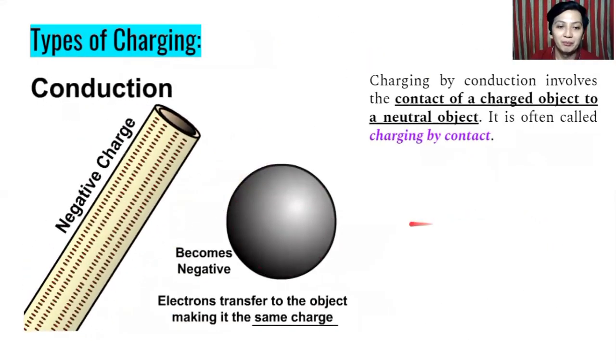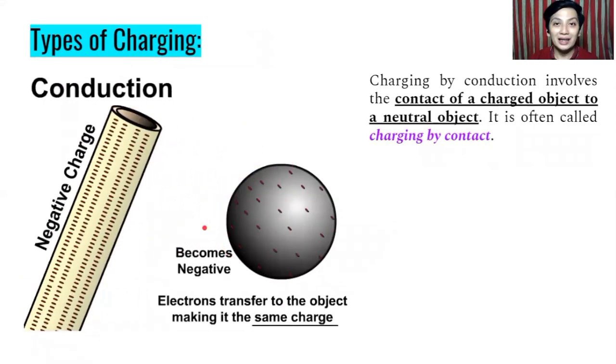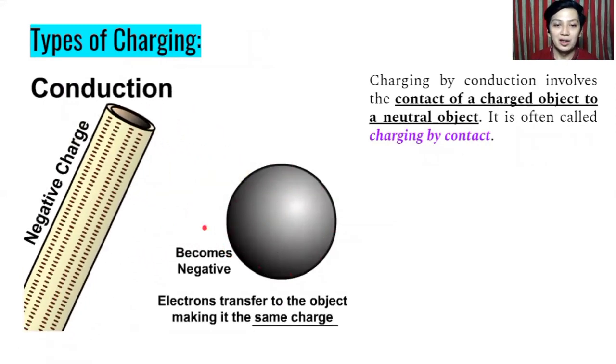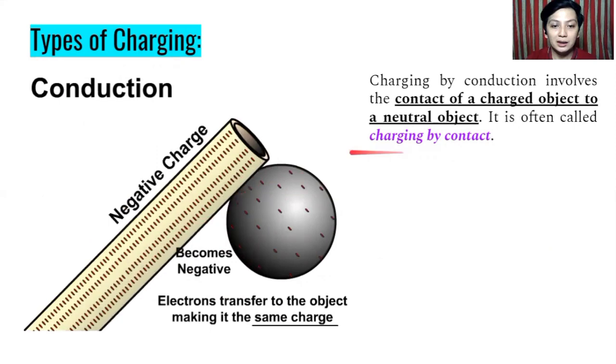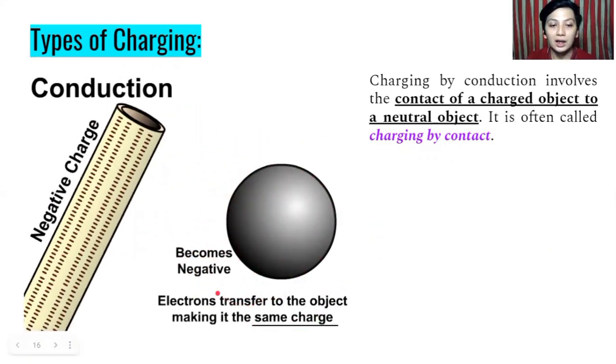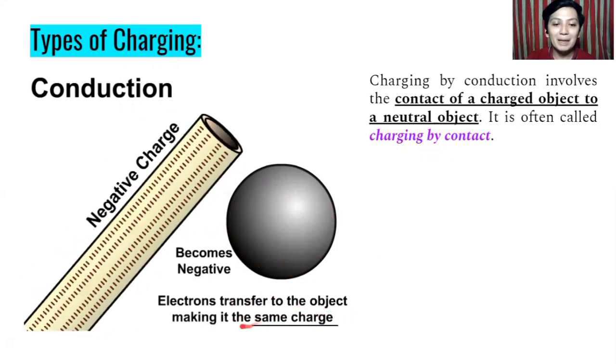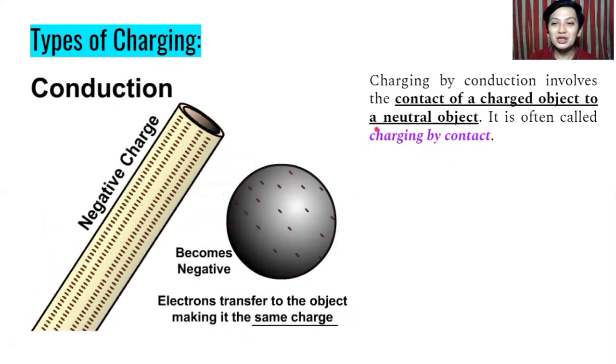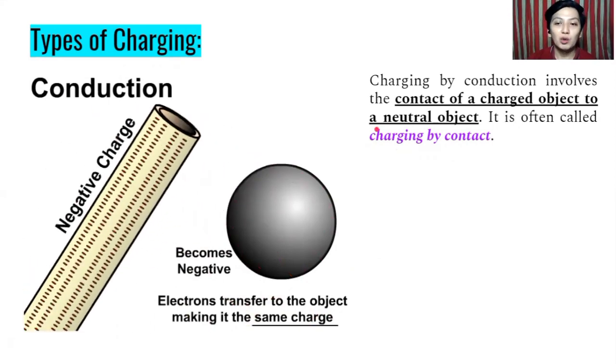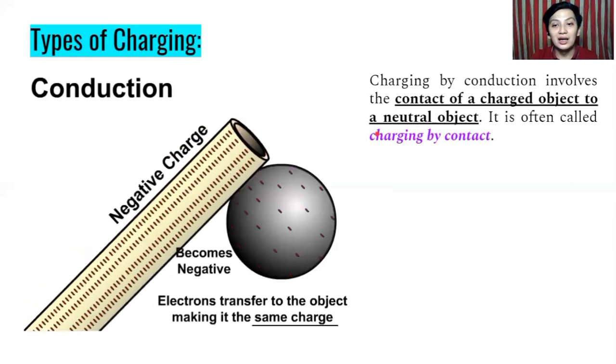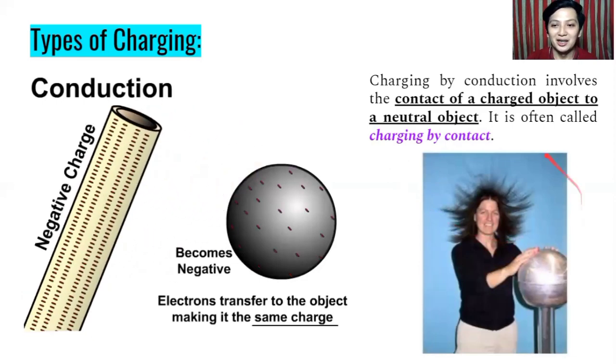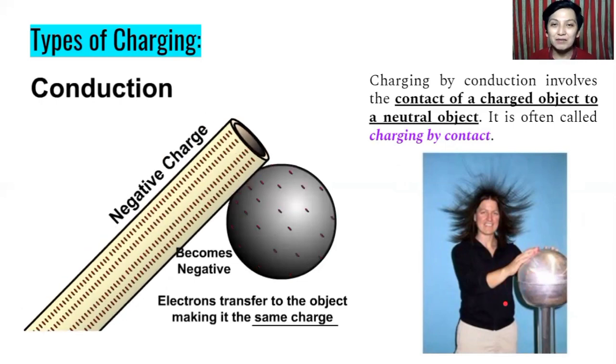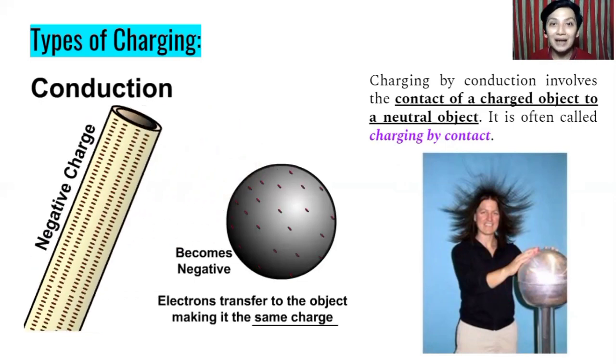And the third one is charging by conduction. This one, as you can see, has the closest contact or has contact to each other. So the negative charge, and then we have here the negative charge pipe, and then the sphere, the metal sphere here becomes negative as well because electrons transfer to the object making it the same charge. So charging by conduction involves the contact of a charged object to a neutral object. So it is often called charging by contact. And this is an example of this charging. So when you touch this spherical ball, it is very charged. So what will happen is that your hair will react, it will rise up.